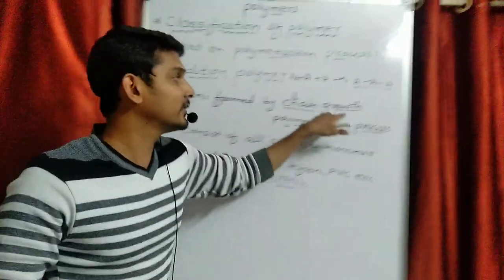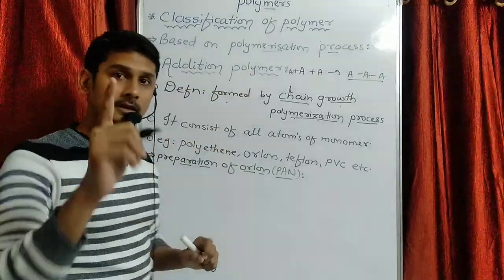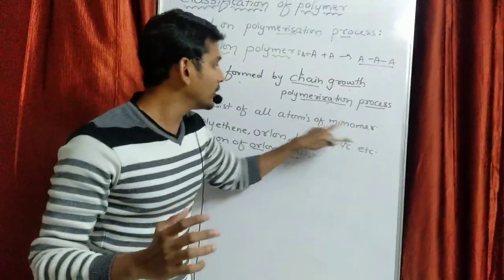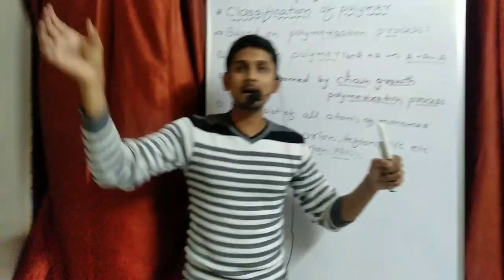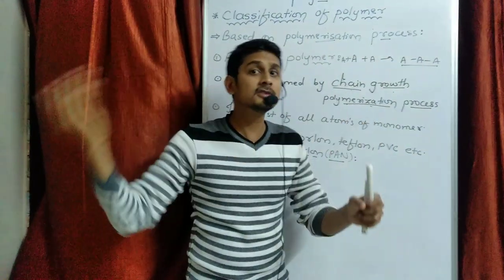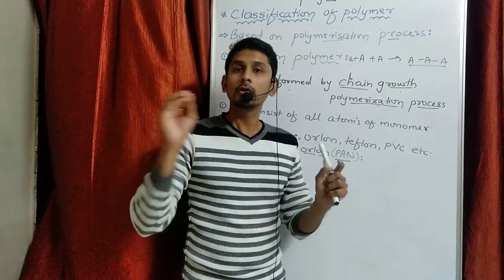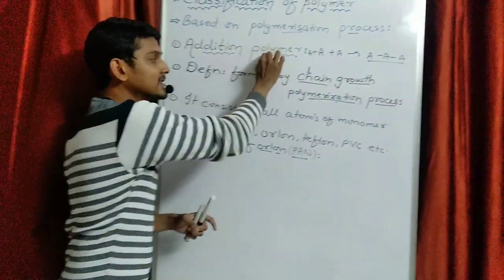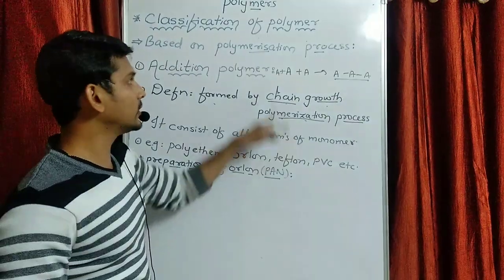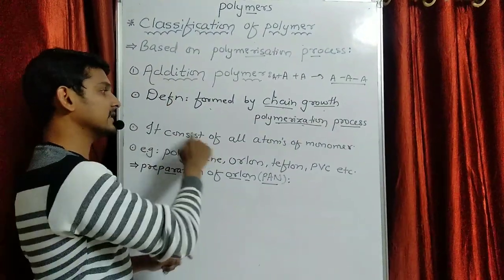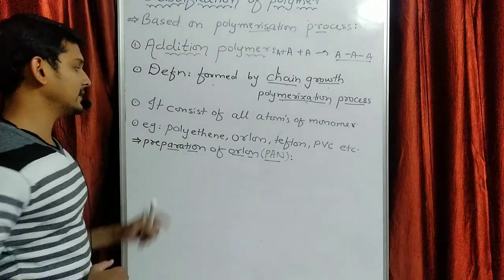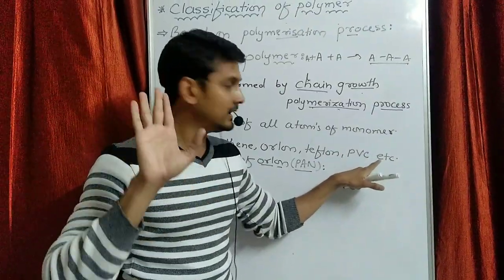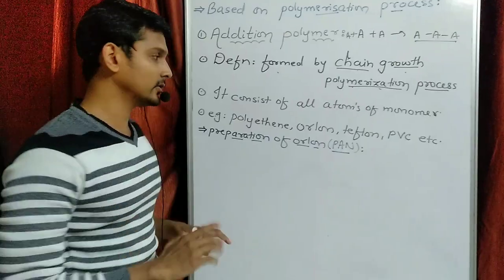A polymer which is formed by chain growth polymerization process is called an addition polymer. Second point: in addition reaction, all the atoms of the monomer are retained in the polymer — the polymer consists of all atoms present in the monomer. Examples of addition polymers are: Polythene, Orlon, Teflon, PVC, etc.